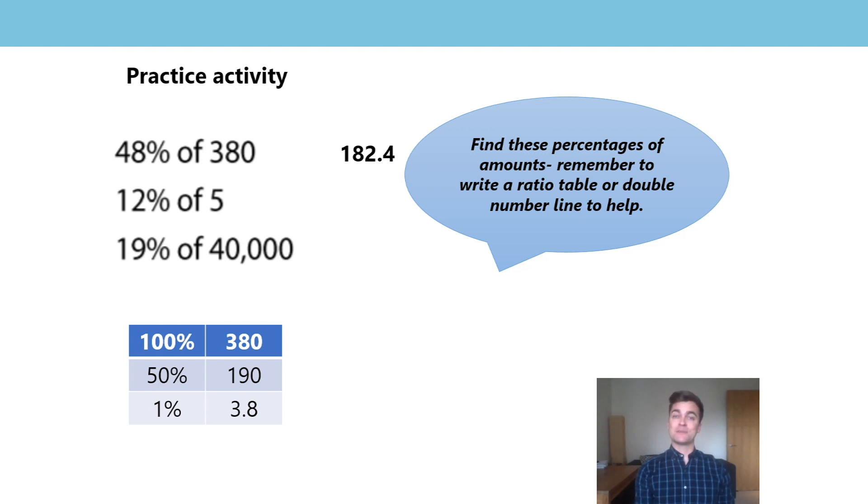Again, if we've got the same solution, it doesn't matter. Next, I have found 10% and 1%. From 1%, I doubled to find 2%. Combined that with 0.5 to find 12% of 5 is 0.6.